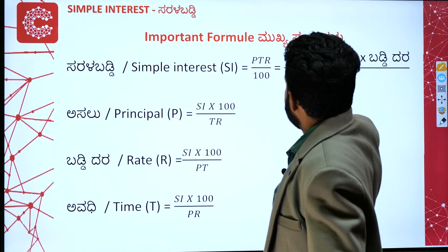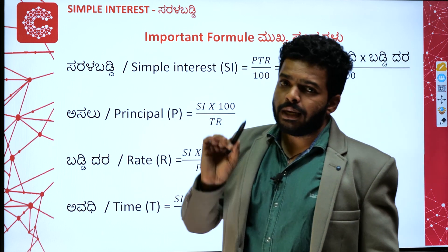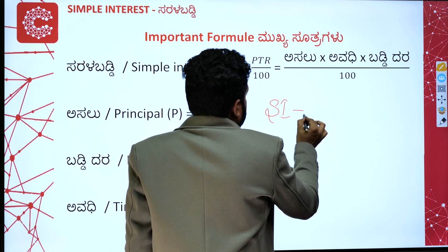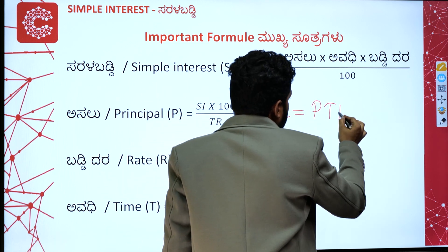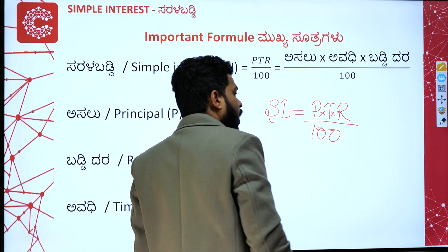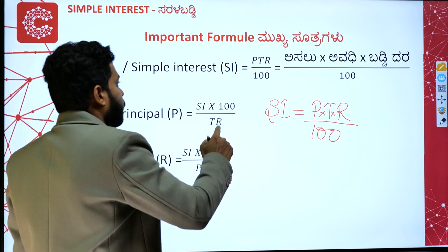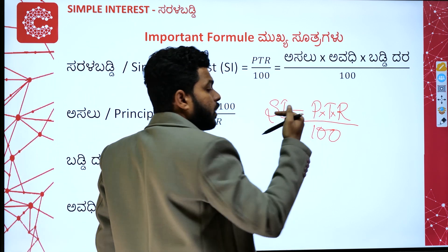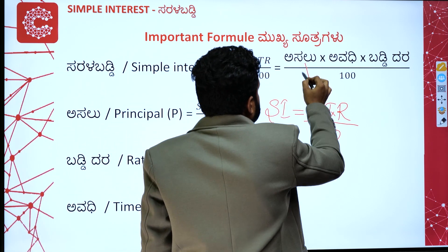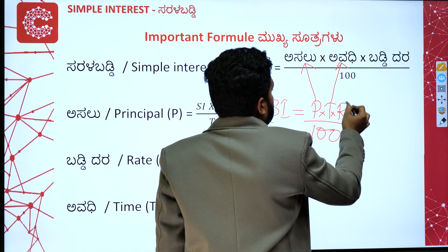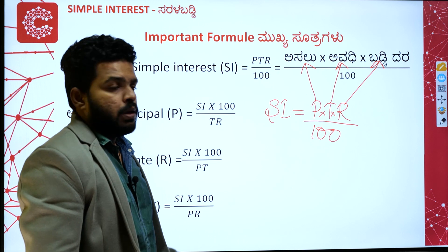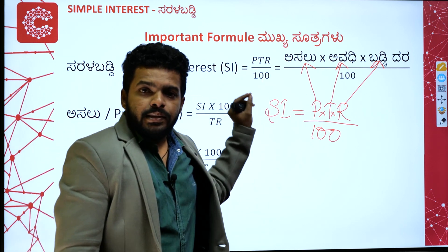The important formula — the main sutra — for simple interest is: SI = PTR divided by 100, that is, P into T into R, whole over 100. Here, P stands for principal amount, T stands for time, R stands for rate of interest, and SI stands for simple interest.